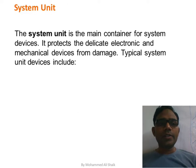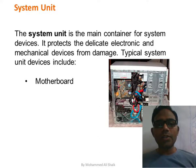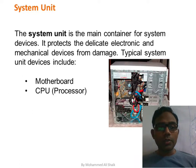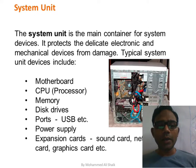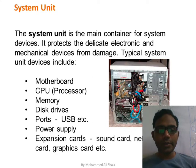The system unit is the main container of the computer. It is the box or chassis that protects delicate electronic and mechanical devices from damage. It includes the motherboard, CPU (processor), memory, disk drives, ports, power supply, and expansion cards such as sound card, network card, and graphics card.